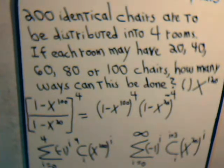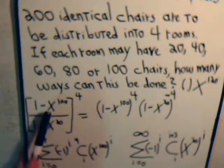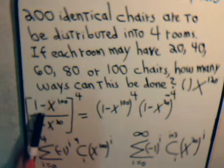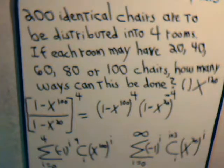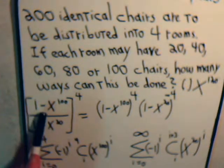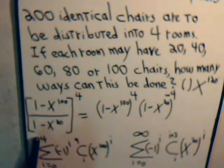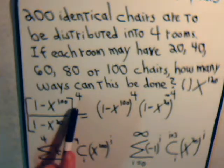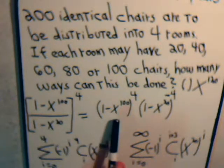And after we set up the generating functions and multiply them together and did some manipulations, we determined that the answer to our problem is in this expression here, determining the coefficient of x to the 120 power. And this, 1 minus x to the 100 divided by 1 minus x to the 20 to the 4th power, we can write it like this.